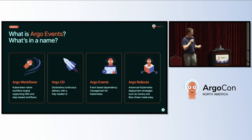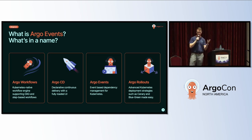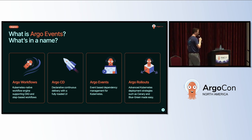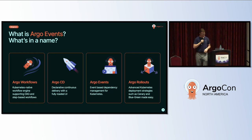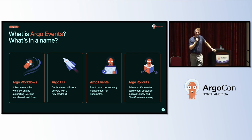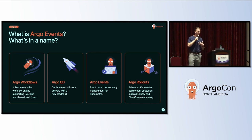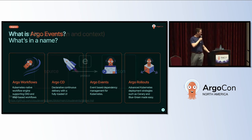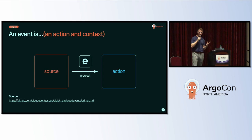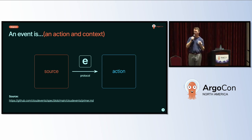So what is Argo Events? Within the Argo project suite of tools there are four different tools: Argo Workflows, Argo CD, Argo Events, and Argo Rollouts. Argo Events is an event-based dependency manager for Kubernetes. It is most tightly coupled with Argo Workflows, and we'll see that a bit later in the presentation.